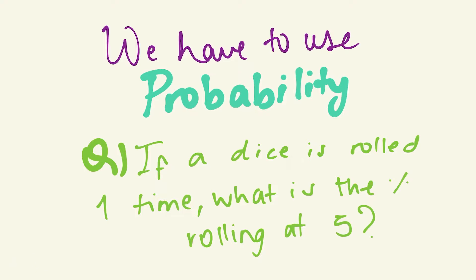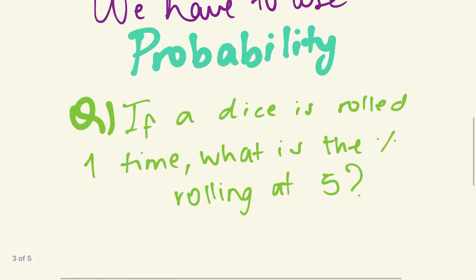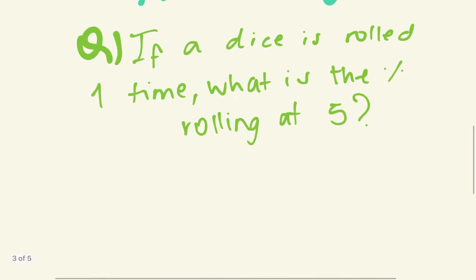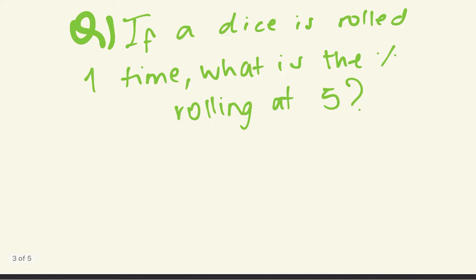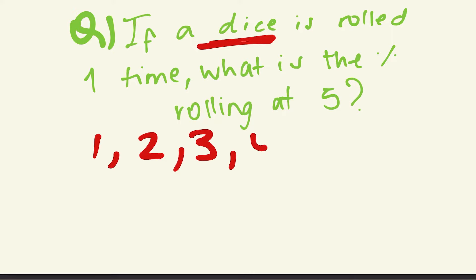We have to use probability, which means we are dividing what we're looking for by the total number of outcomes. The first question says: if a dice is rolled one time, what is the percent probability that it will land on five? When we talk about dice, we know we can get six outcomes: one, two, three, four, five, and six.